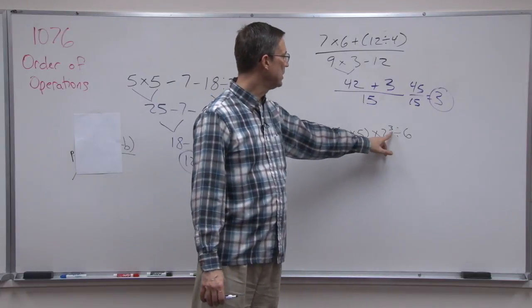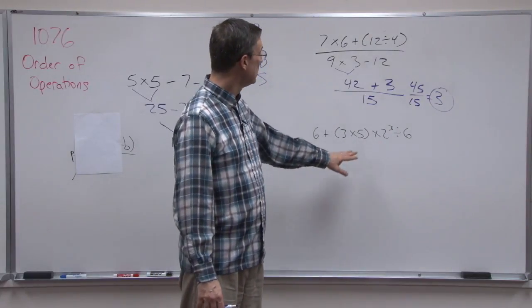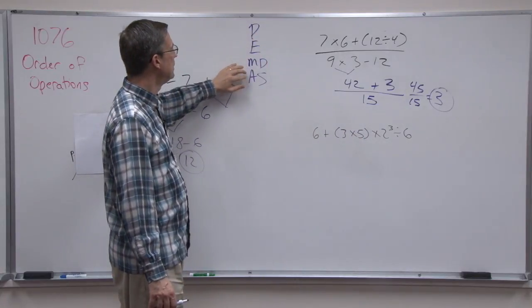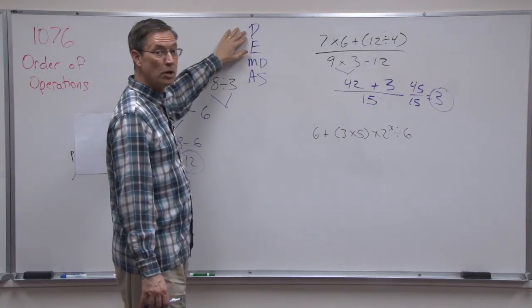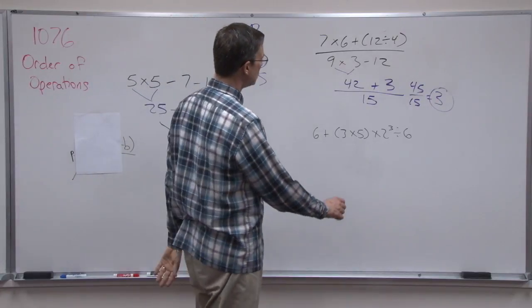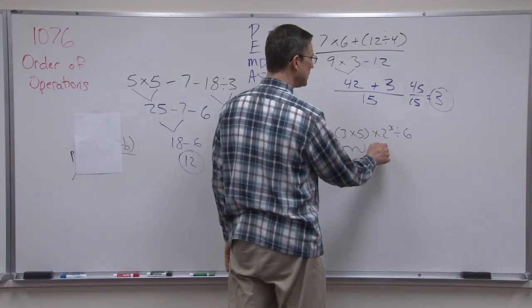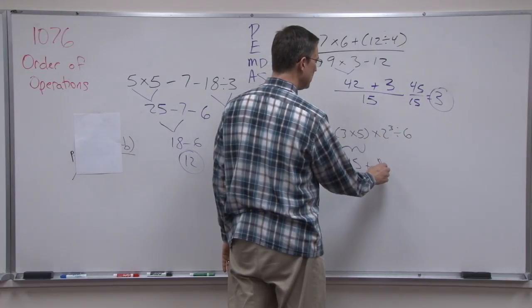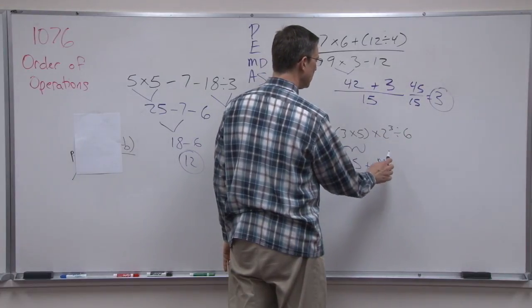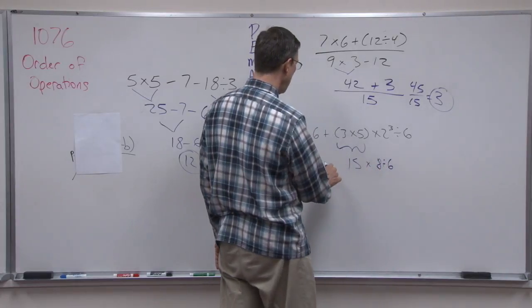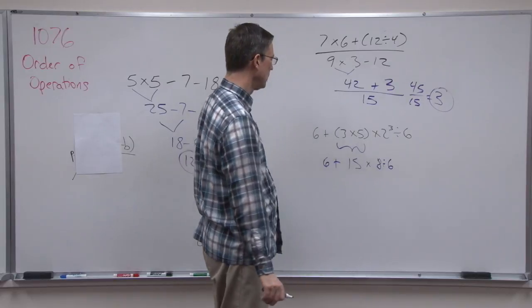Now this problem here has an exponent in it, and a parenthesis. So please excuse my dear Aunt Sally. I want to start with the parenthesis. So this will be 15. But then the next step I want to do is 2 to the 3rd is 8. And then 6 plus.